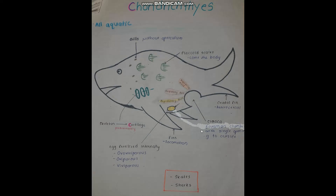Chondrichthyes have a cloaca, which is a common chamber with a single opening to the outside. The respiratory duct, excretory duct, and digestive duct all empty into this cloaca.